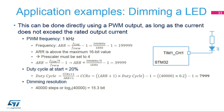The second step consists of computing the compare register value to have a 20% duty cycle, yielding a value of 7999. Lastly, the dimming resolution can be computed: with a timer running at 40 MHz, a 1 kHz PWM provides 40,000 dimming steps, which corresponds to an equivalent resolution of 15.3 bits.